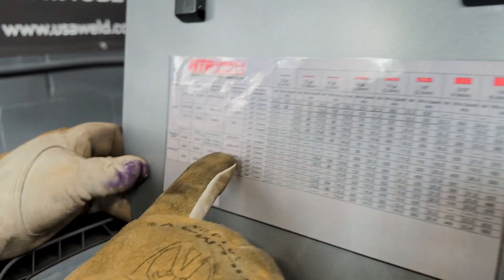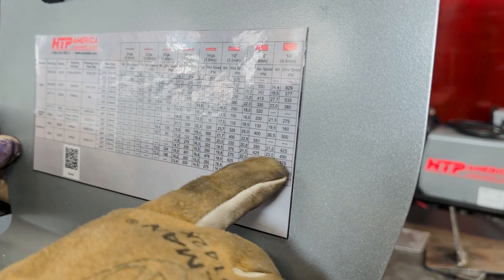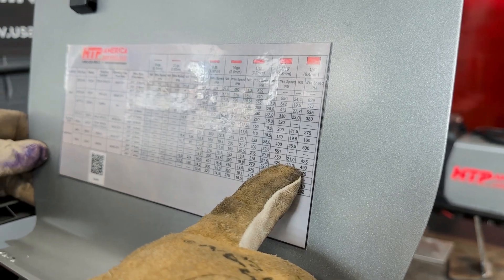So, now the next step is using the same wire 4043 035 all the way up to quarter inch, 490 inches per minute at 23 volts.